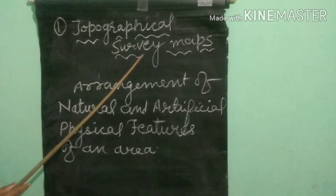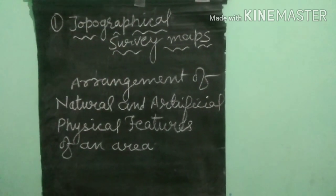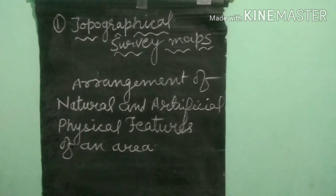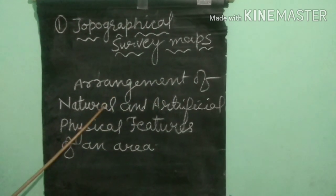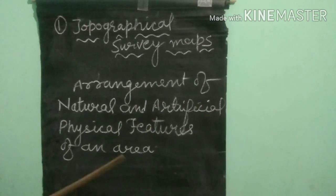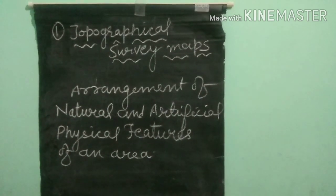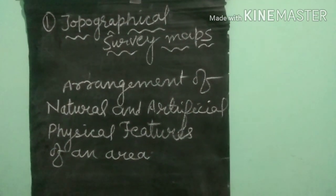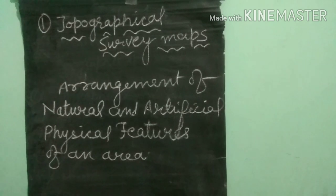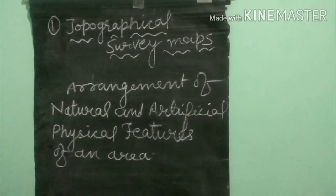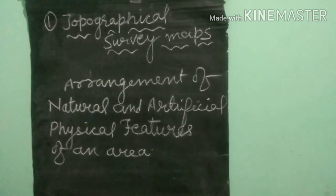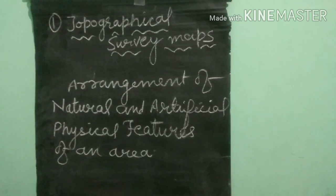The first topic is topographical survey maps. First of all we shall do the meaning of topography. Topography is the arrangement of natural and artificial physical features of an area. Topographical maps are based on topographical surveys and are performed at large scales. These maps are an important tool and are useful for planification and town plans. All the natural and man-made features are portrayed by means of symbols and conventional signs.